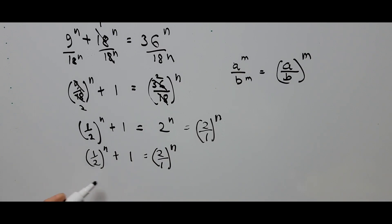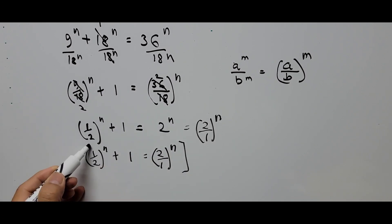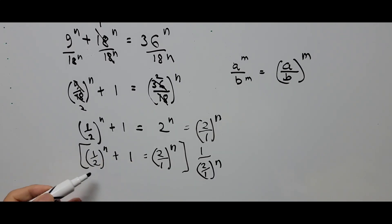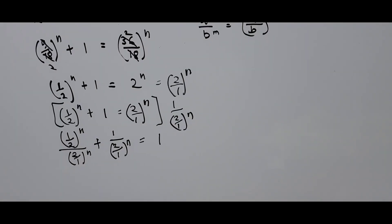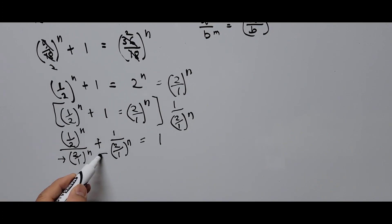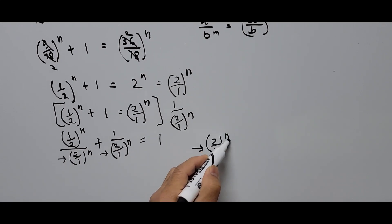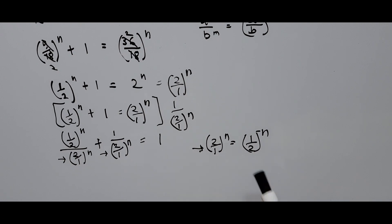From here we divide the whole equation by (2/1)^n — equivalently, multiplying by (1/2)^n. So (1/2)^n divided by (2/1)^n, plus 1 divided by (2/1)^n, equals 1. We now focus on transforming the denominator: 2/1 raised to the power n can be rewritten as 1 over (1/2)^n, applying the reciprocal rule with negative exponents.